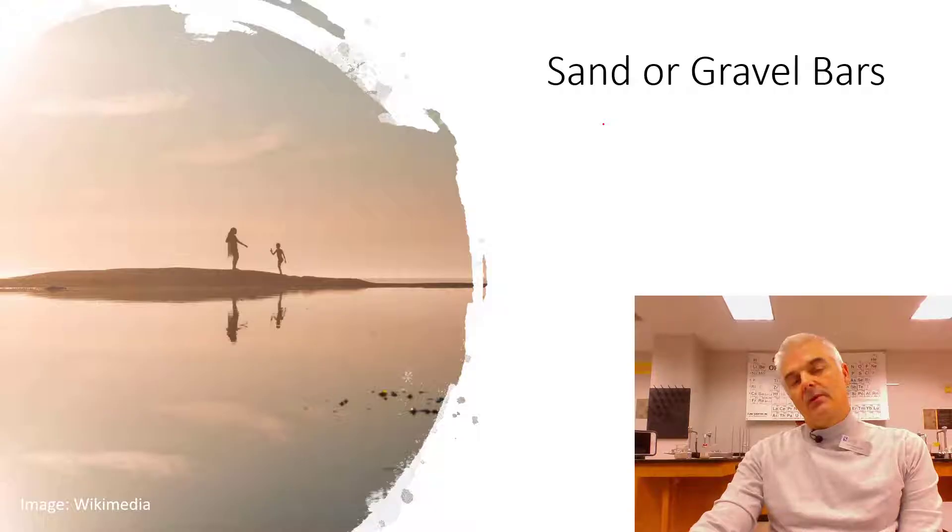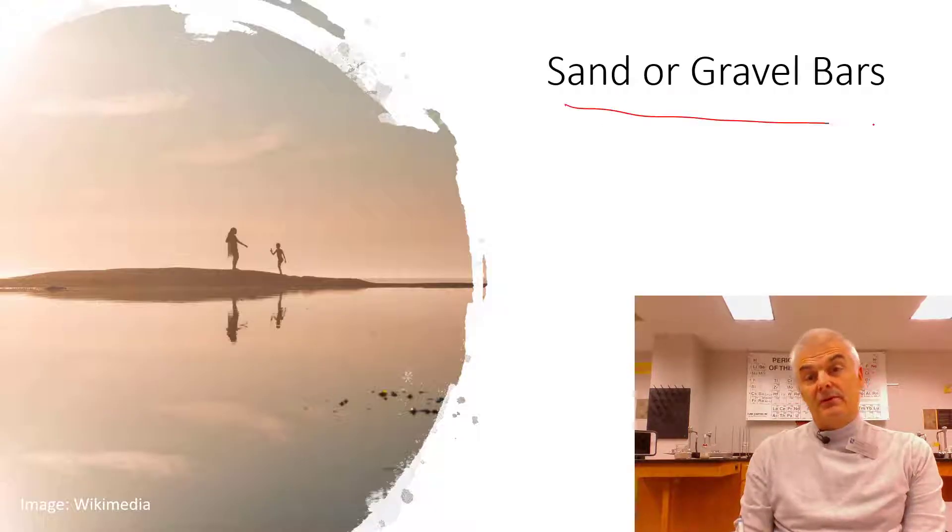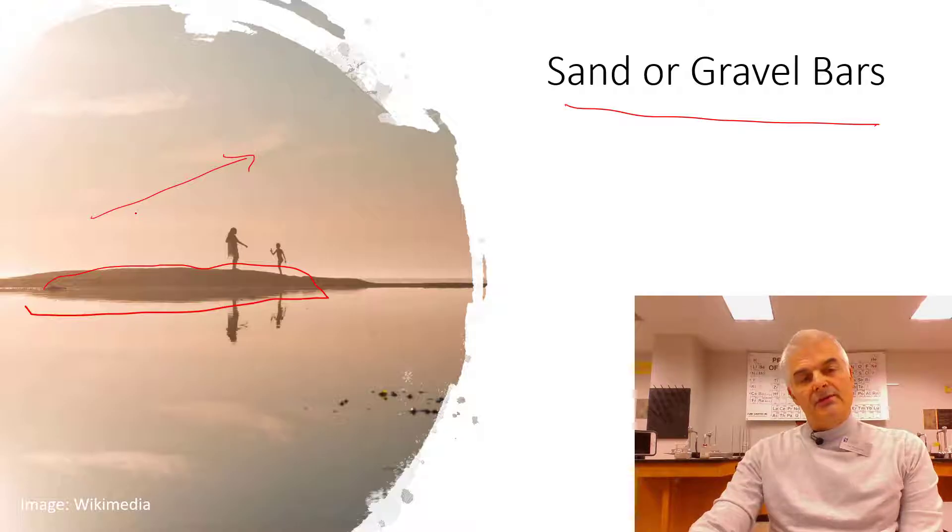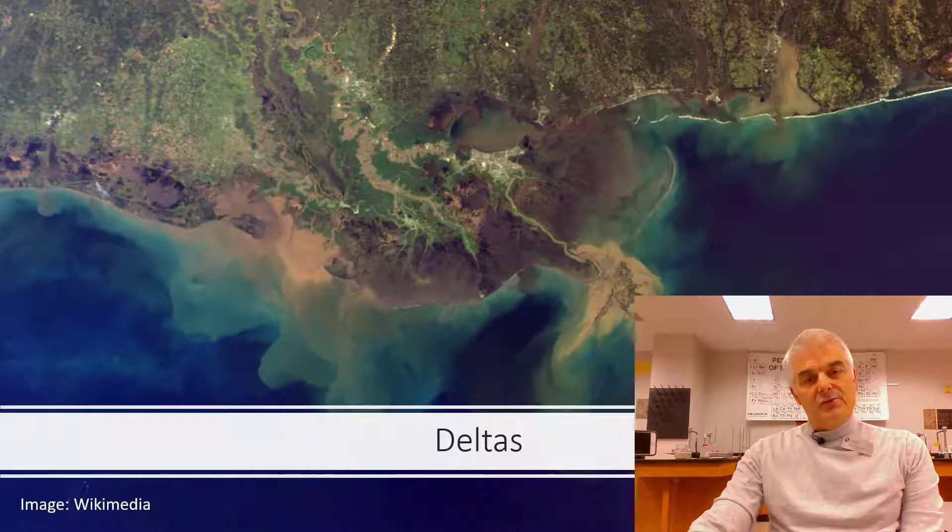The most simple one is called a sand or gravel bar. As a river deposits sediments, it can create a little bar, a sand bar. You'll see this out in Galveston. In many ways, Galveston and that whole area is a sand bar.